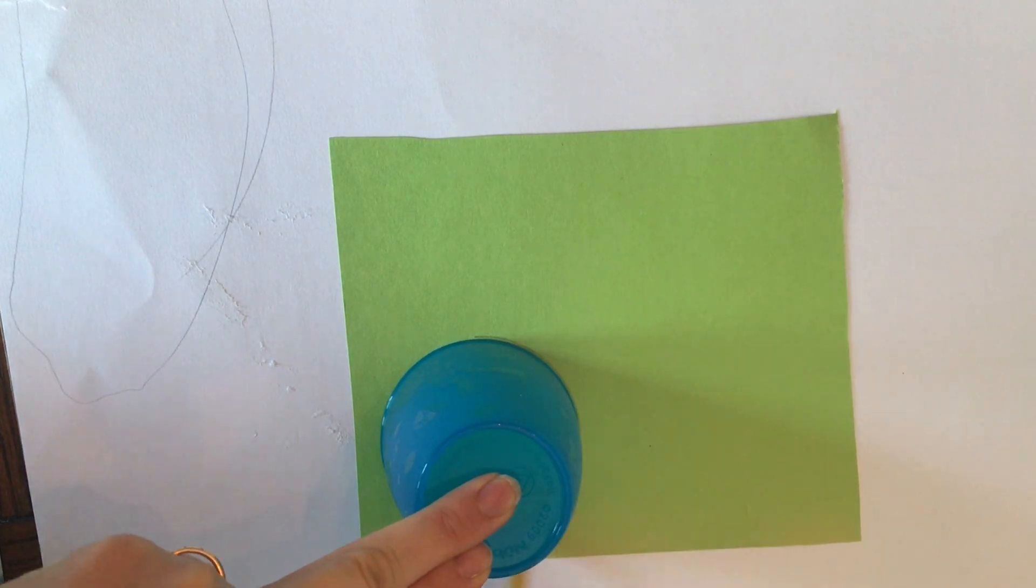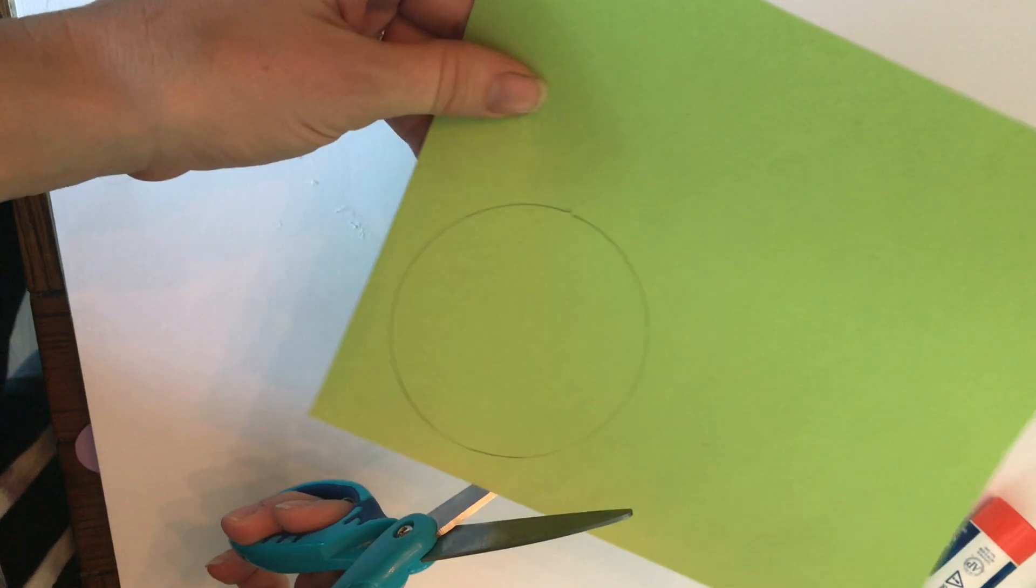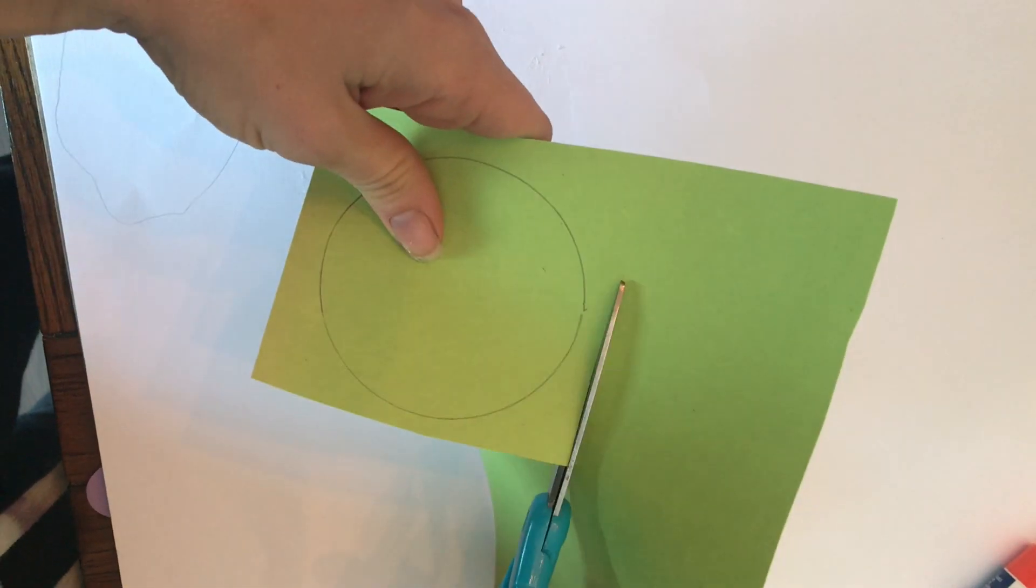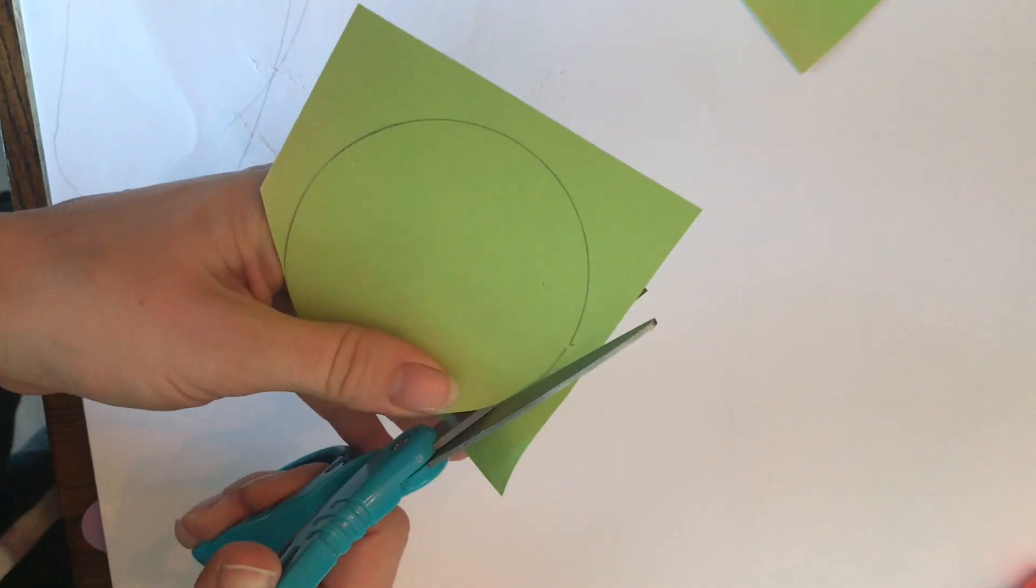A cylinder starts with a circle. So find a circle like a cup to trace. Do it on the edge of your paper that you're cutting and cut off all that extra stuff to make it a little easier. When I cut out a circle I hold my scissors still and I turn the paper.